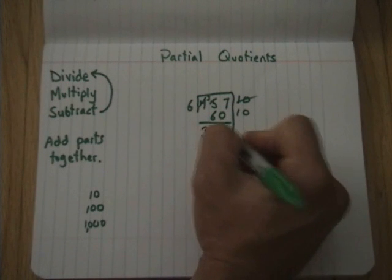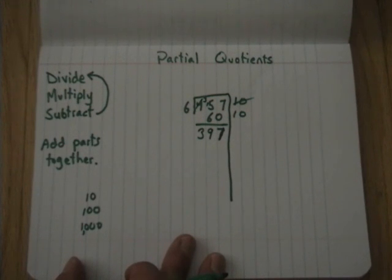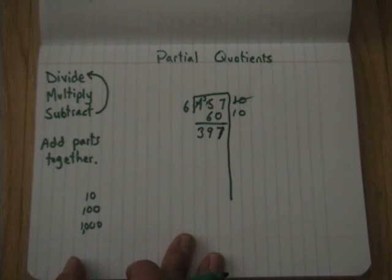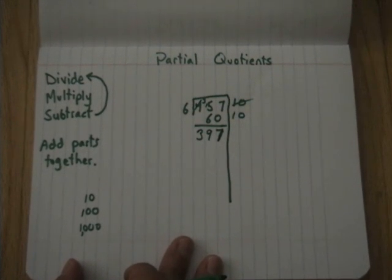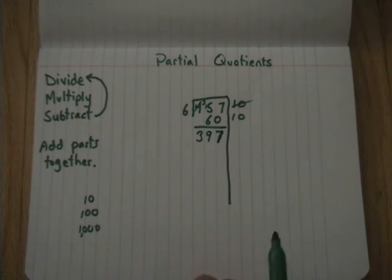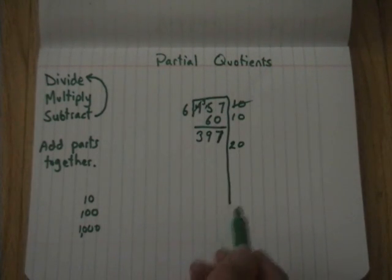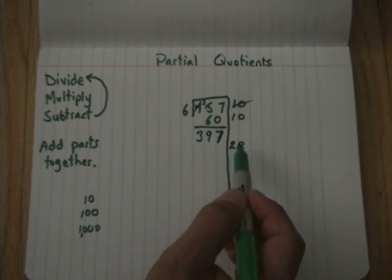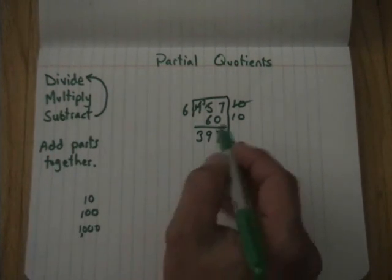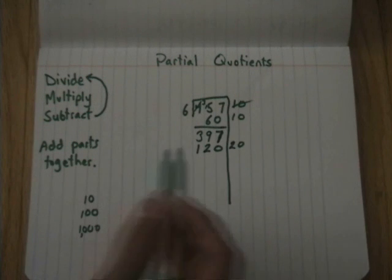So, I'm going to keep on doing this. I can keep on using 10s. If I see that that's going to take a long time though, I can speed it up. That's kind of nice about this algorithm is that it takes however much time you want it to take. If you're only comfortable with grouping into 10s, it'll get the job done, but it will take some time. I'm going to speed it up a little bit. I know that 60 and 60, I know that 6 and 6 is 12. So, I know that 60 and 60 is 120. So, I'm going to use, again, some mental math here. In this next group, I'm going to do a little bit bigger. 20 times 6. Again, that was my divide step. I just did my 20. I'm going to do 20 times 6. That's my multiply. I'm going to get 120. It's a little bit bigger. It should go a little faster. And I'm going to subtract now.